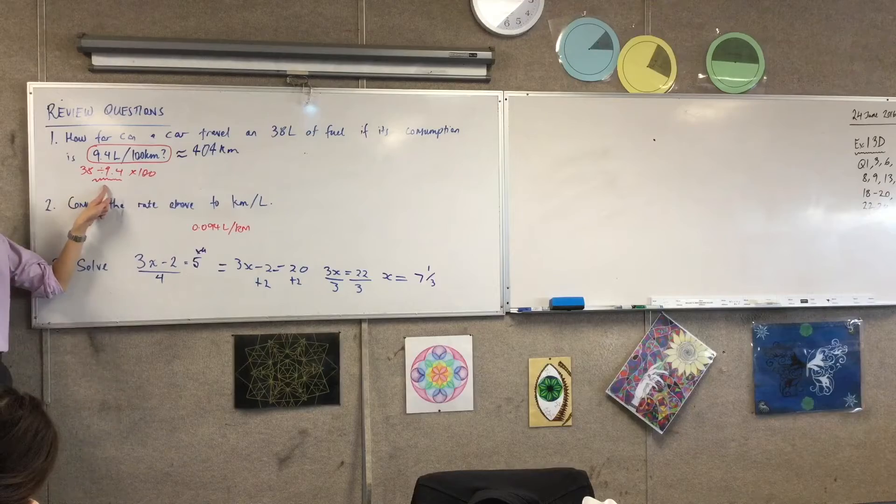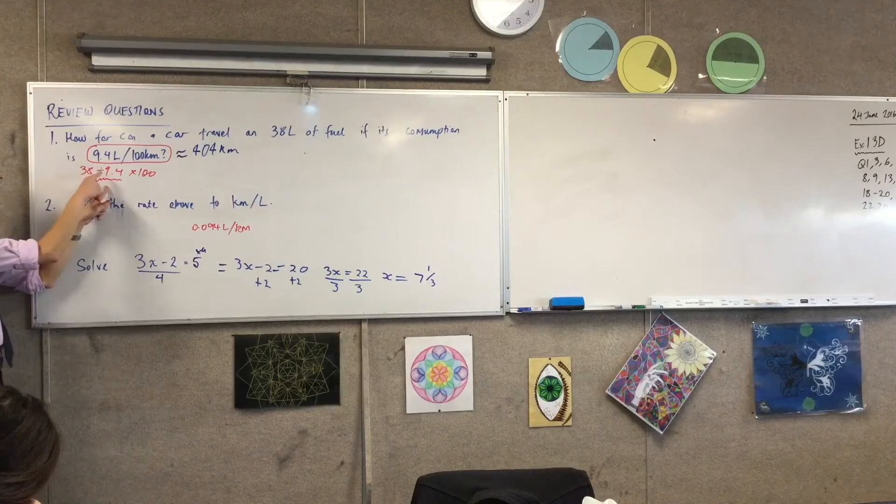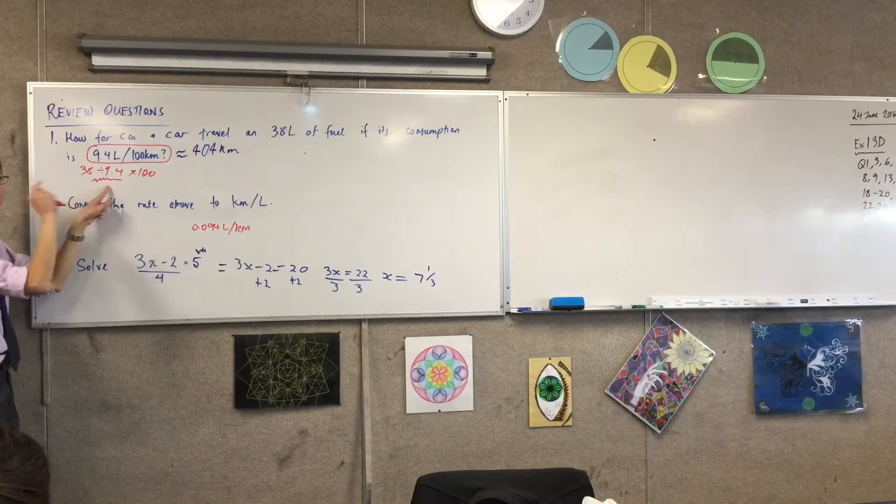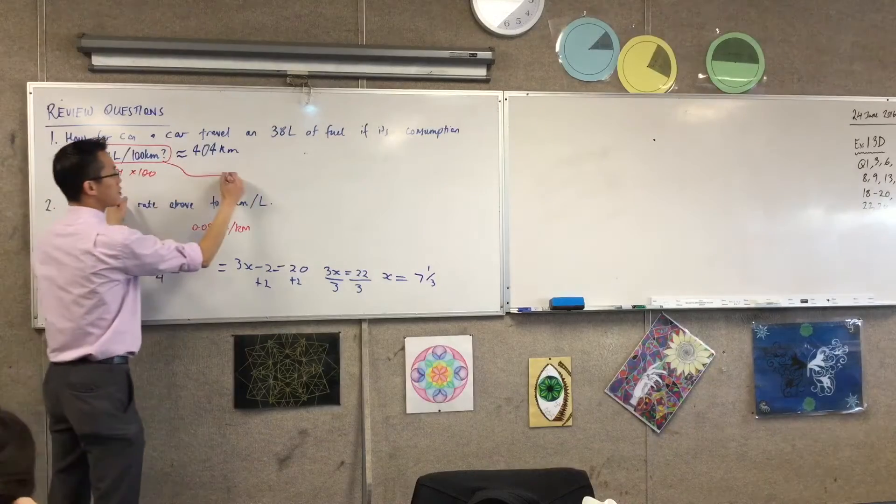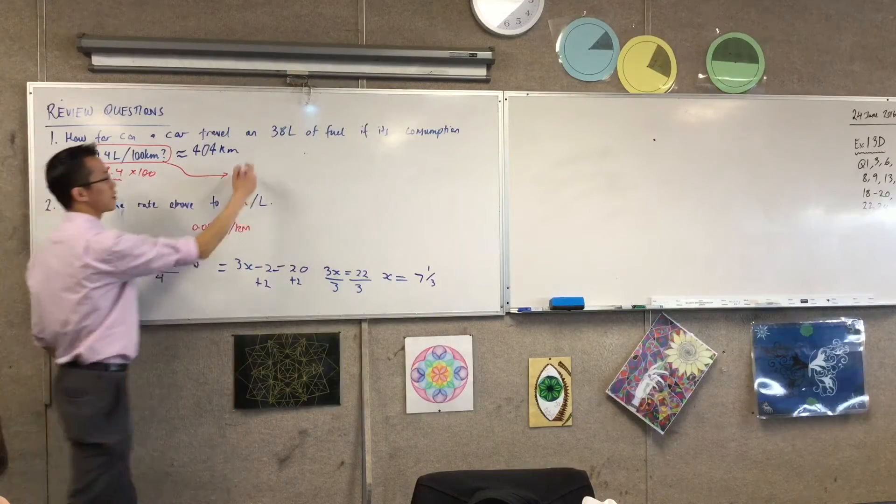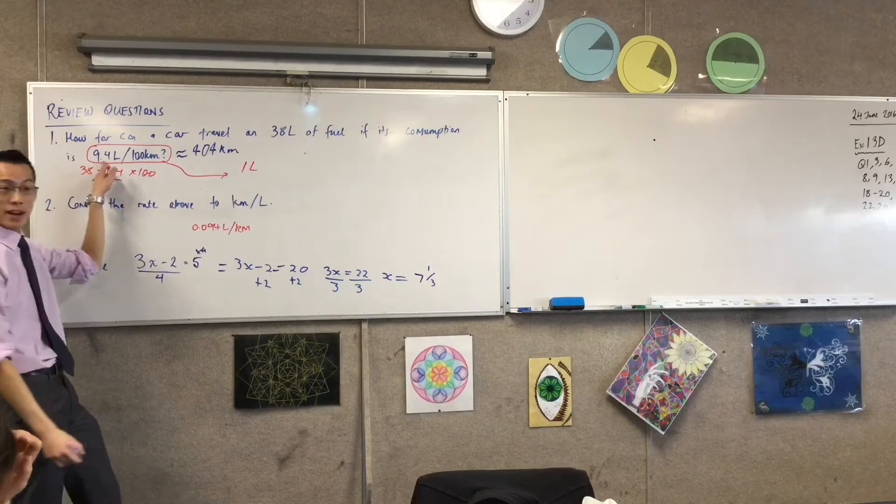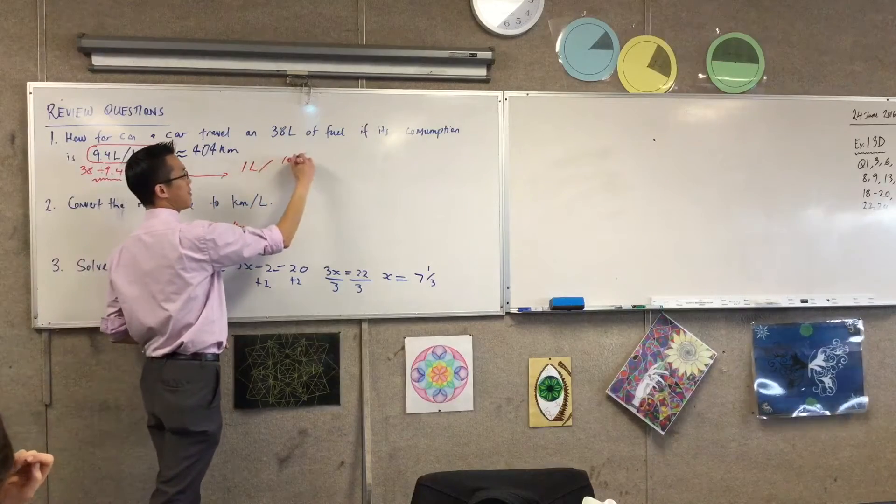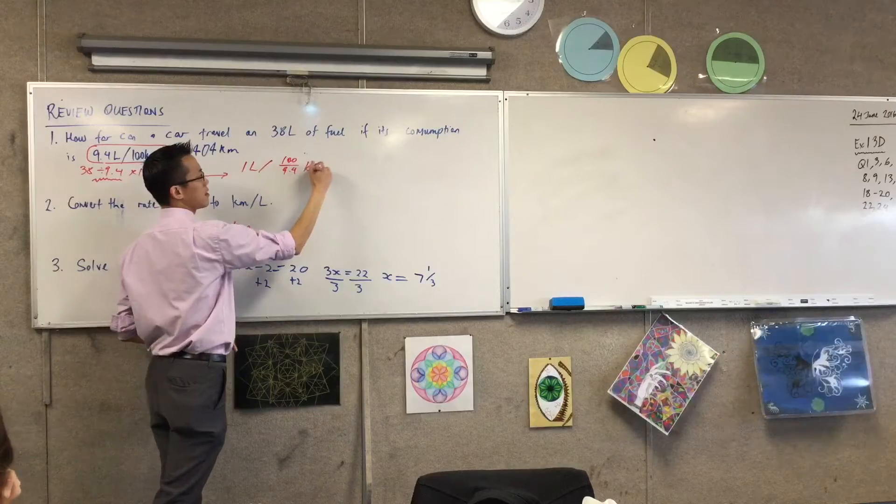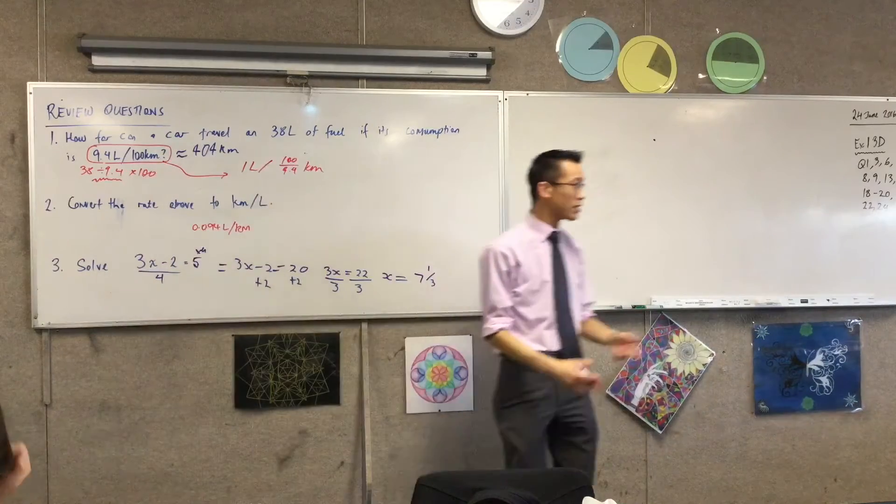Okay, dividing by 9.4 turns this into a rate not about 9.4 liters but about 1 liter. So it would turn into this: divide both of those by 9.4, that gives you 1 liter on the left. When you divide that through, and then you get whatever this number happens to be on the right hand side.